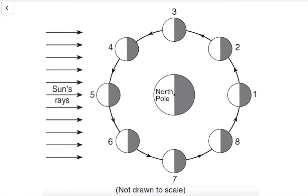Sometimes when you look at a diagram of the earth, moon, sun system, the sun might be displayed on the other side. So in the last two diagrams we looked at, the sun was on the right-hand side. In this diagram here, the sun — we can see from its rays — is on the left side of the diagram. In this case, we have to remember that the sun's rays are on the opposite side, and that's really what determines where the full moon phase and the new moon phase are.